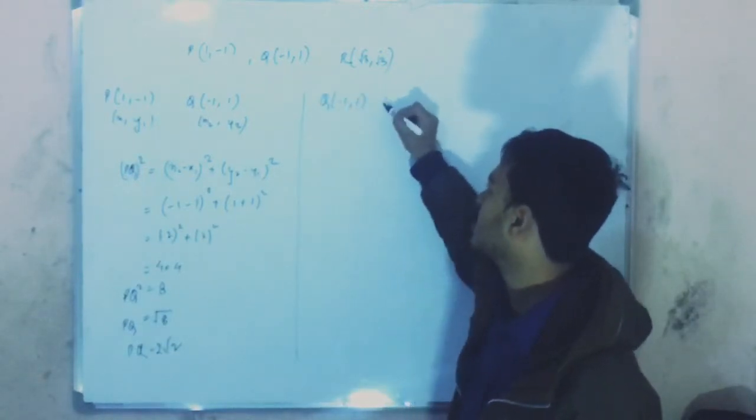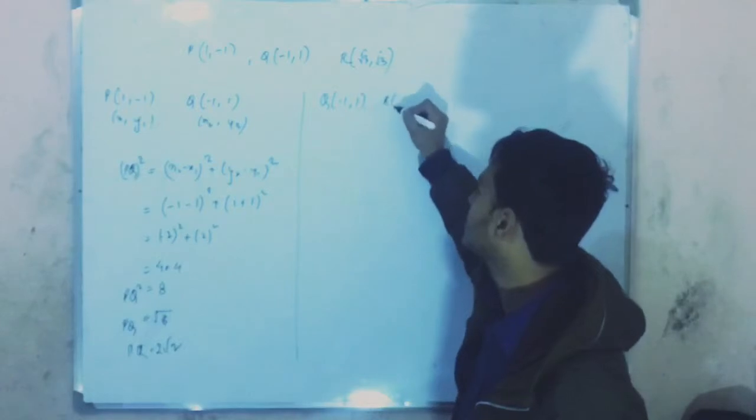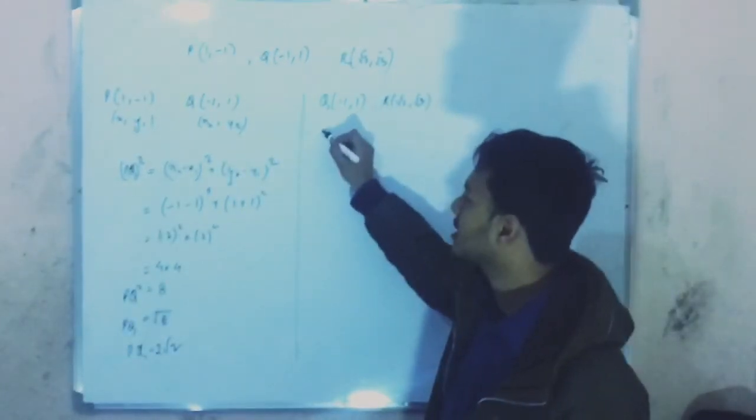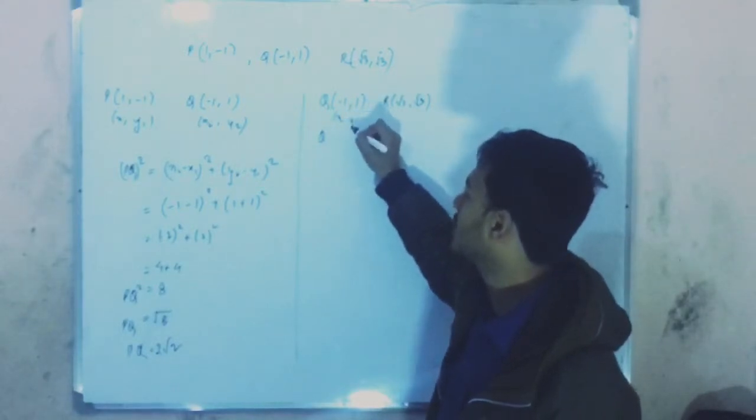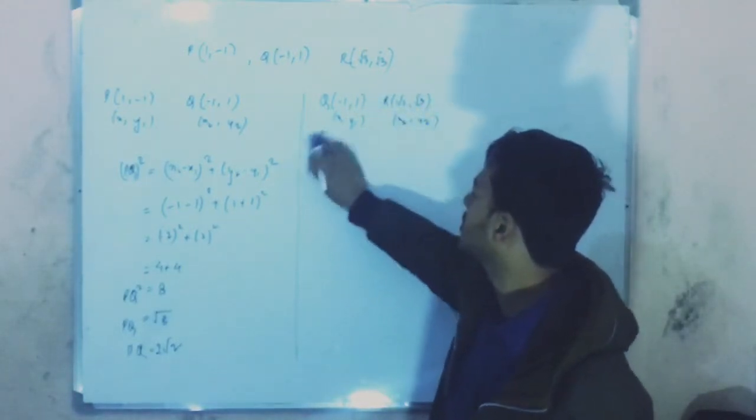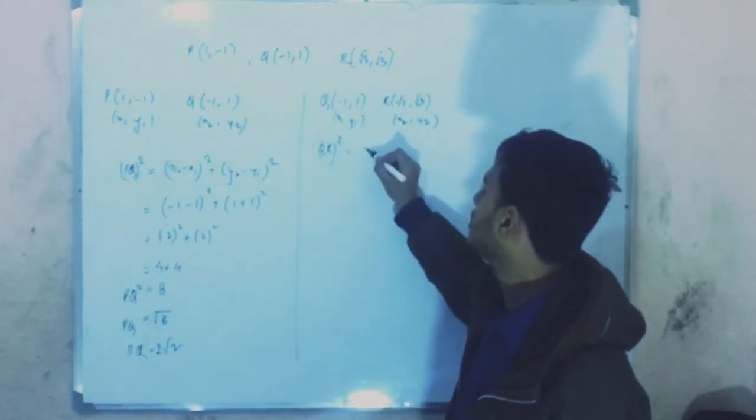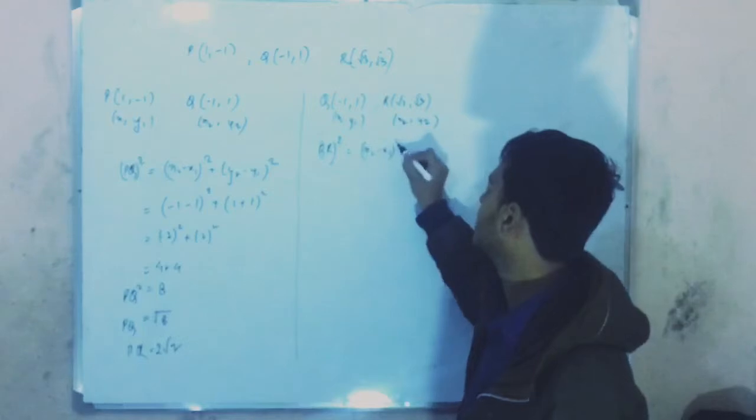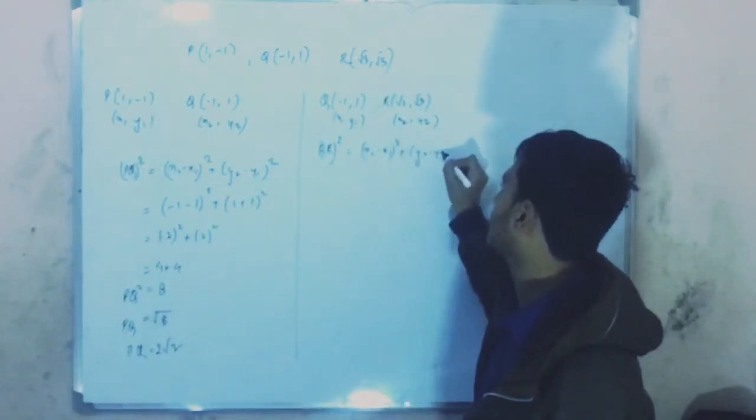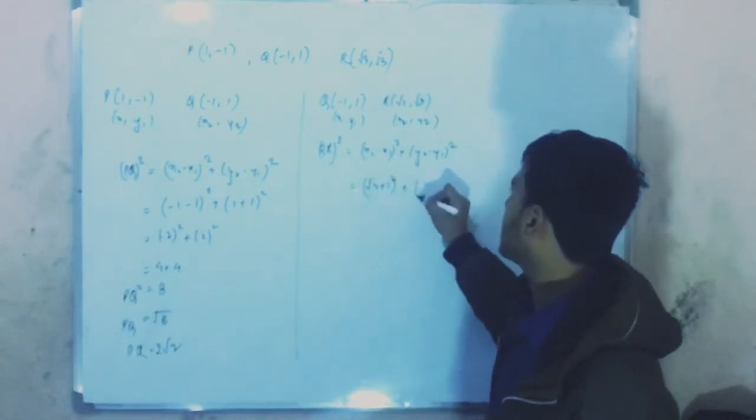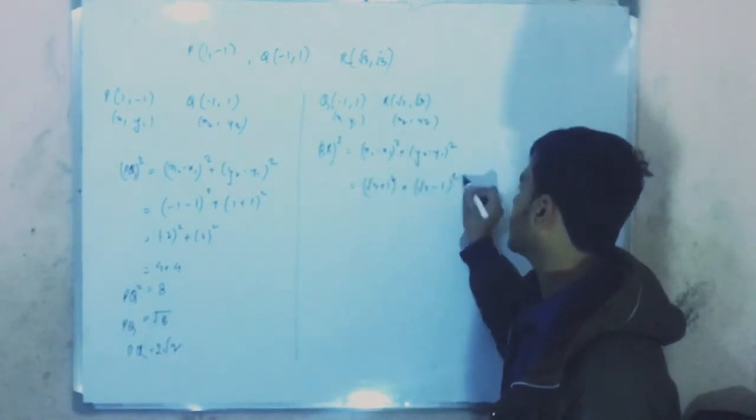Q is at minus 1 comma 1, and R is at root 3 comma 3. Using the distance formula with x1, y1, x2, y2, this will be square root of x2 minus x1 squared plus y2 minus y1 squared. So root 3 minus minus 1 squared plus 3 minus 1 squared.